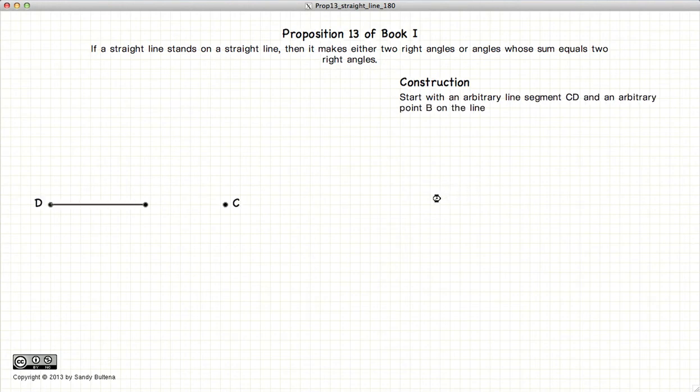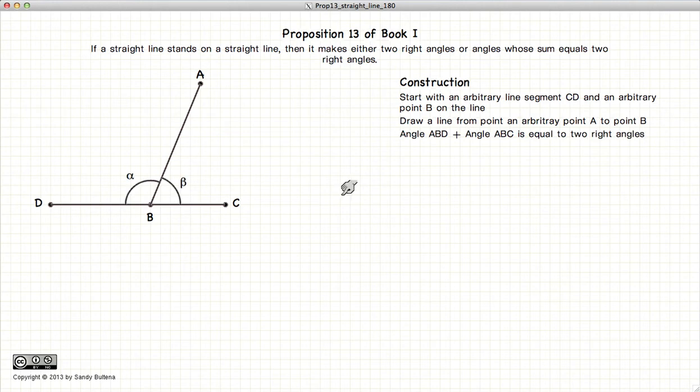So let's begin. First we start with a straight line DC with a point B on our line. Next we draw a line BA and label the angles alpha and beta.